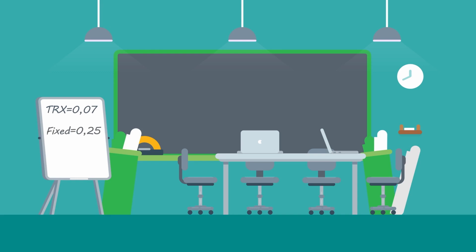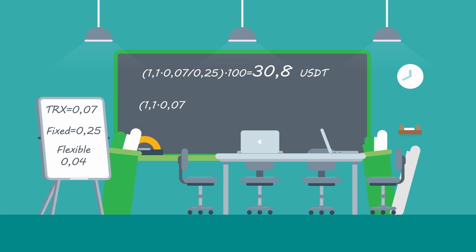The yield rate for fixed staking is 0.25% and for flexible staking it is 0.04%. In this case, the minimum break-even amount in fixed staking is: 1.1 × 0.07 ÷ 0.25 × 100 = 30.8 USDT. For flexible staking: 1.1 × 0.07 ÷ 0.04 × 100 = 192.5 USDT.